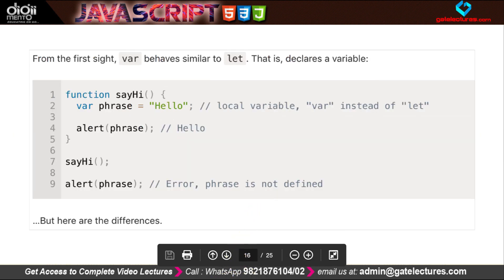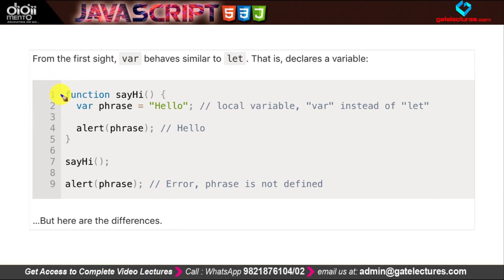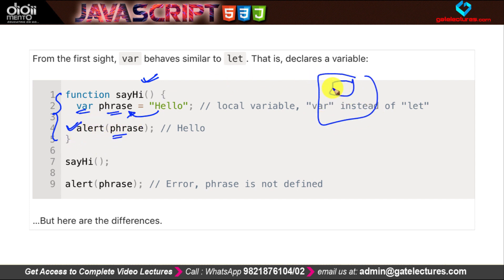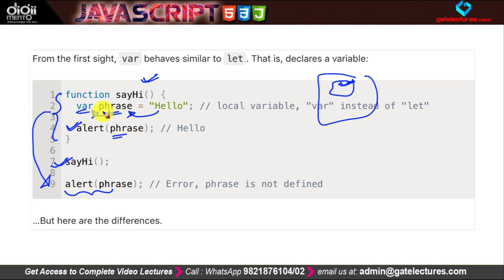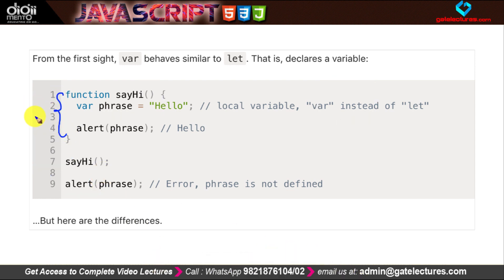Both var and let keywords behave exactly the same in many cases. For example, if we have a function 'sayHi' with a variable 'phrase = hello' and we alert it inside the function, a dialog box shows 'hello'. However, if we try to use 'alert phrase' outside the function, the var variable does not exist there — because this variable was declared inside the function and is not available outside it. The var keyword has function-wide scoping.